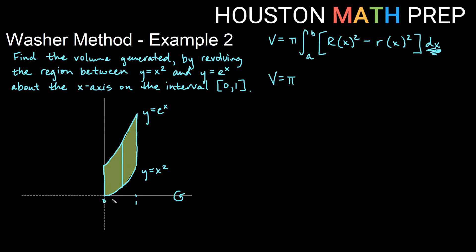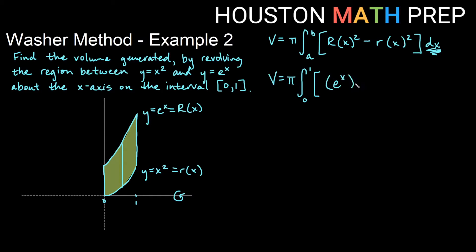Our volume equals pi times the integral from 0 to 1. The farther radius is e to the x, since it is farther from the axis of revolution — that is our big R of x. The x squared function is closer to the axis, so that is our little r of x. Plugging in, we get e to the x all squared minus x squared all squared, dx.